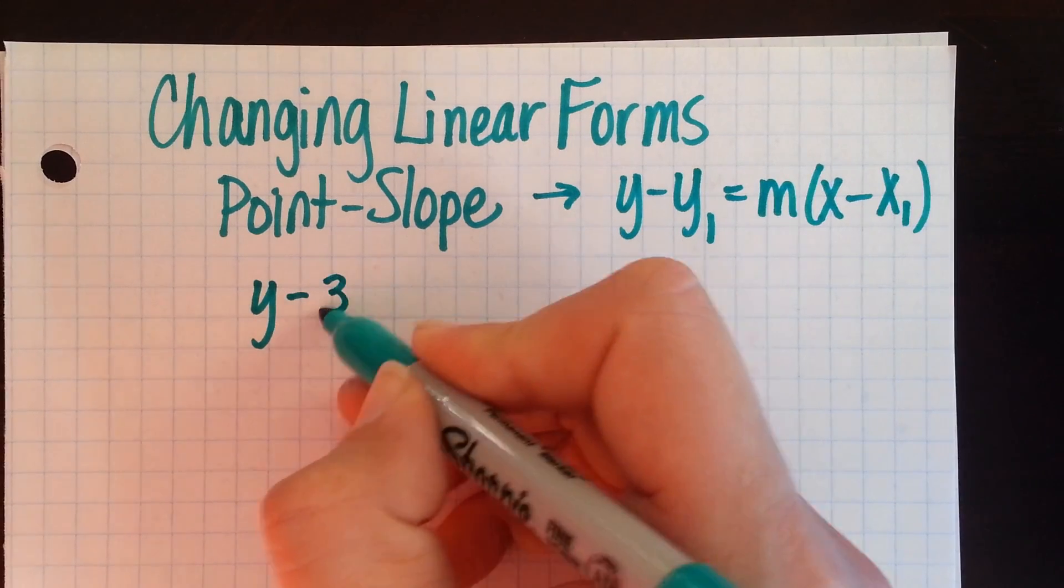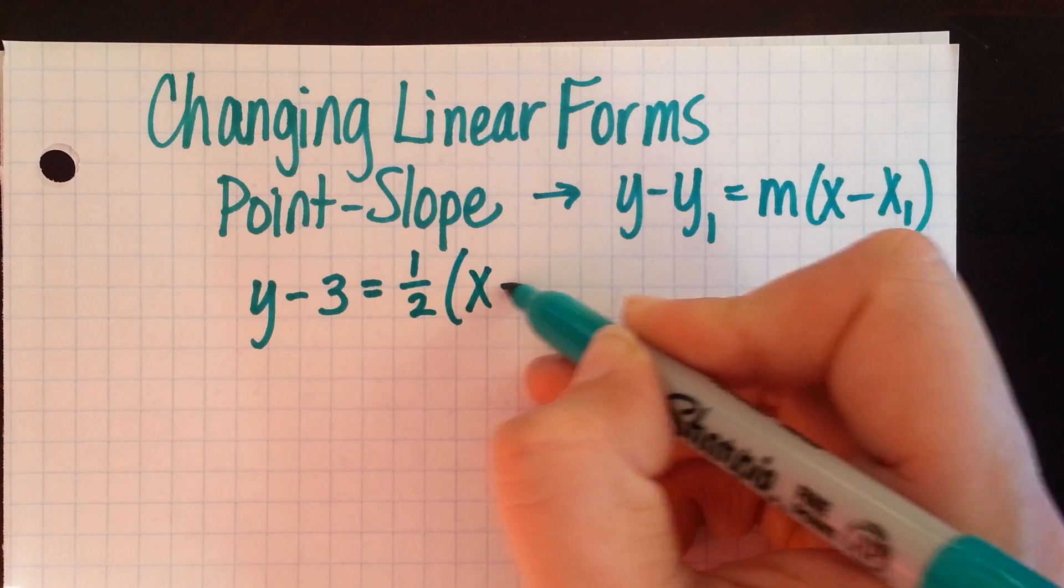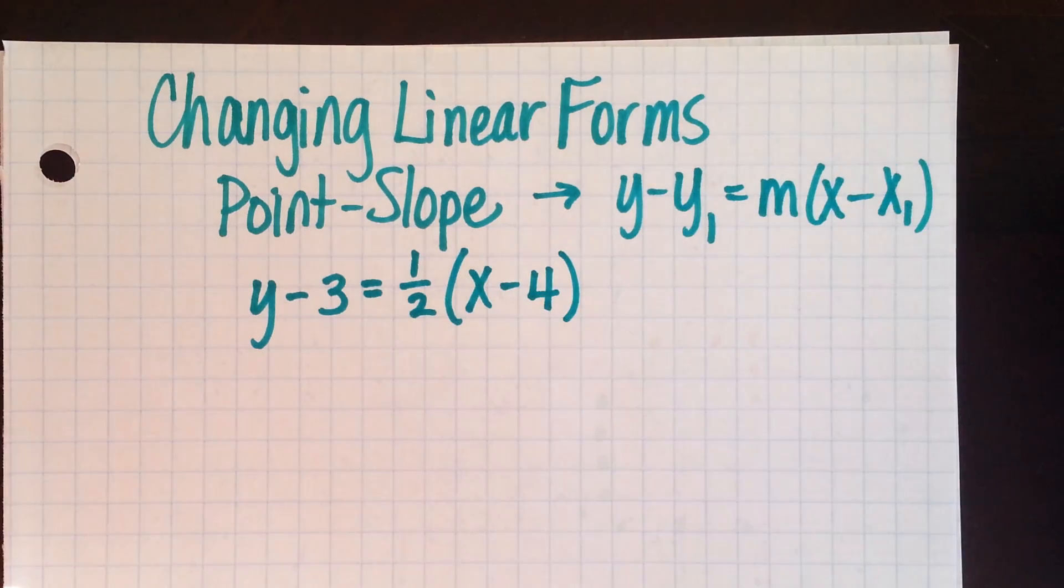Say we use the example y minus 3 equals 1 half times x minus 4. That's in point-slope form.